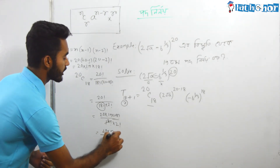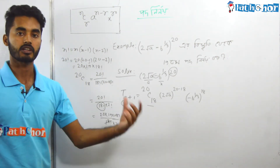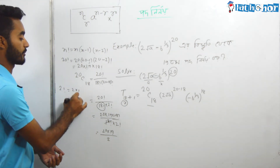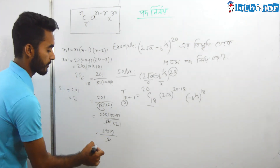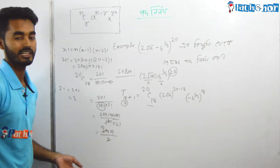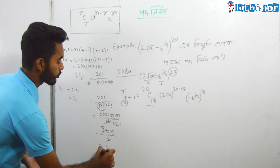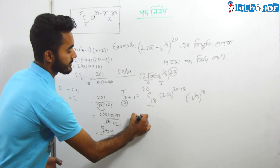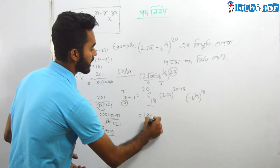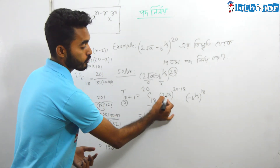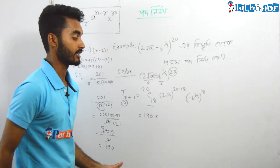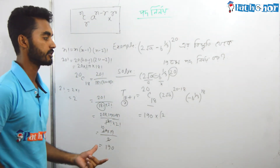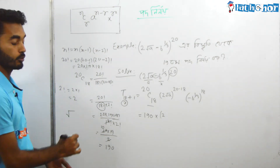20 into 19 divided by 2 factorial. 2 factorial is 2 into 1, which equals 2. So we get 10 into 19, which is 190. So 192 — the coefficient is 190. Then a to the power 2 times 20 minus 18, which is 2 root a to the power 2.